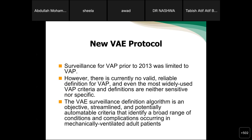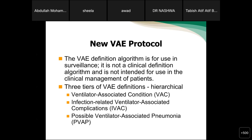Recently, pediatric VAE surveillance has also been started in place of VAP. The VAE definition algorithm is for use in surveillance — it is not a clinical definition and is not intended for clinical management of the patient. It is only used for surveillance purposes. Clinicians will treat patients according to patient needs and conditions. The three tiers of VAE definitions are hierarchical: ventilator-associated condition (VAC), infection-related ventilator-associated complication (IVAC), and possible ventilator-associated pneumonia (PVAP). Today's lecture will cover all three: VAC, IVAC, and PVAP.